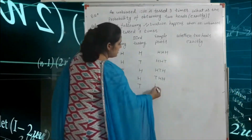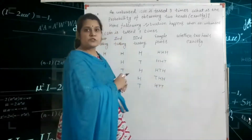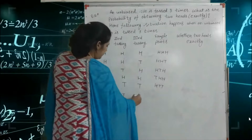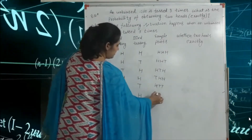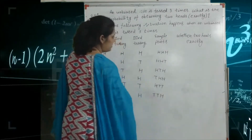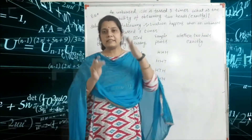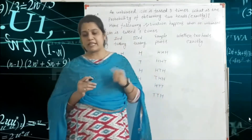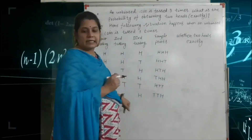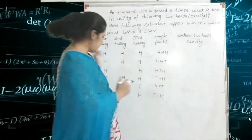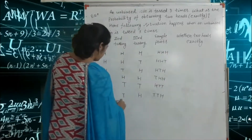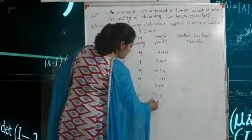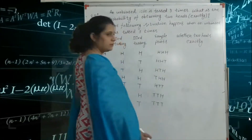Next one is tail, tail, head — TTH. Next condition is tail, tail, tail — TTT. So here we are making all the combinations because the coin is tossed three times. For example, all three times we are getting tail, so we write tail, tail, tail.